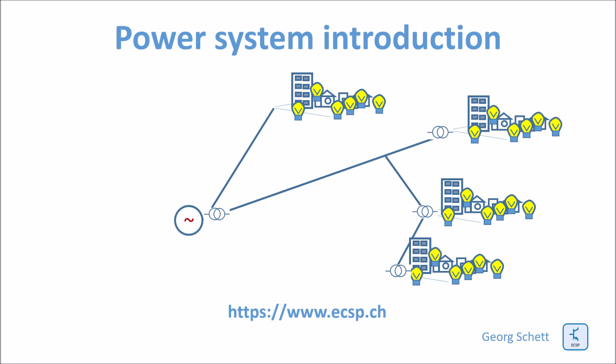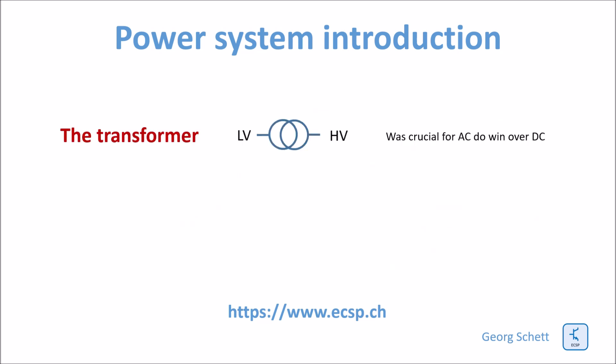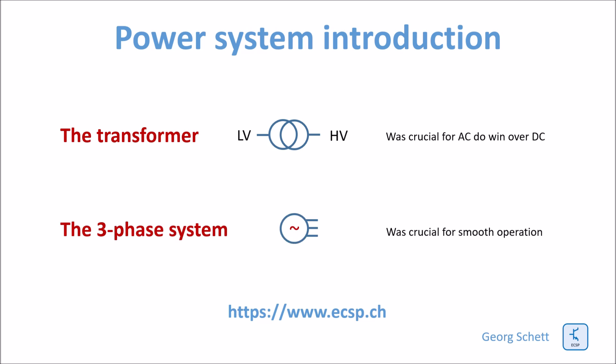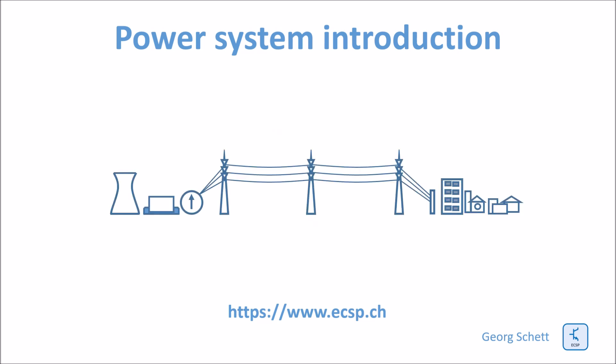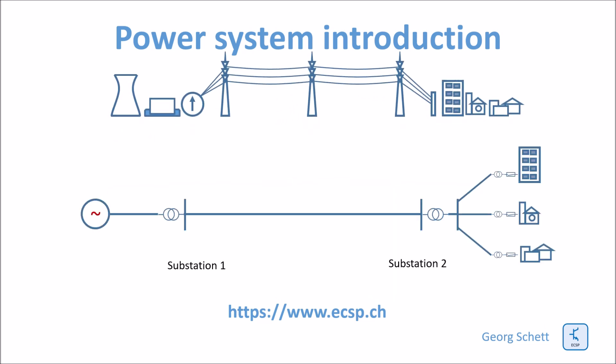With the emerging high voltage transmission technology, two important marks were set. First, the transformer was crucial for AC to win over DC — so far they had been in the race. Second, the three-phase system was invented, which was crucial for smooth mechanical operation of the transmission system, especially at the generator. Let me come back to the three-phase picture and start to be a little more technical by introducing the single line diagram of the scheme.